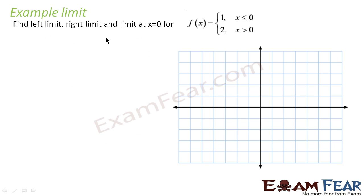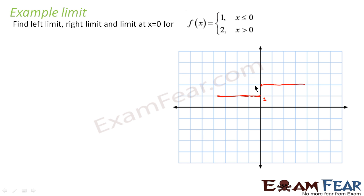We will take one more example. We have to find the left limit, right limit, and the limit at x = 0 for this function. For any number less than 0, the function value is 1. For any number greater than or equal to 0, the function value is 2. So 0 is included in the second piece, making f(0) = 2.